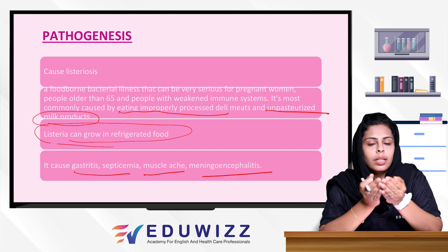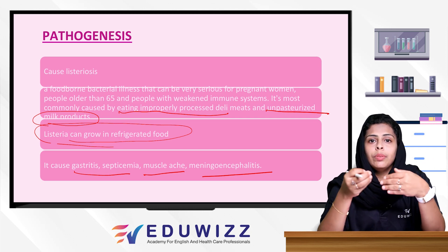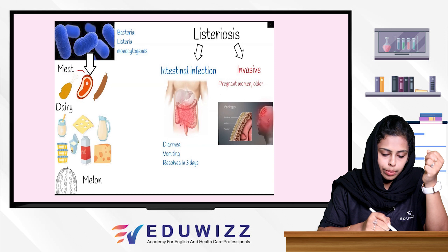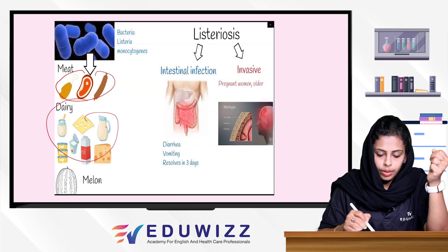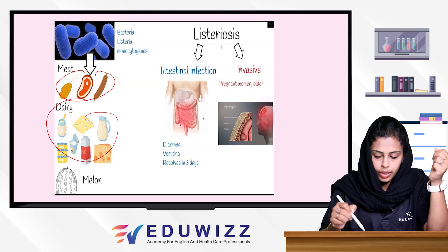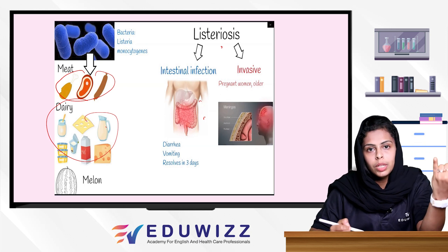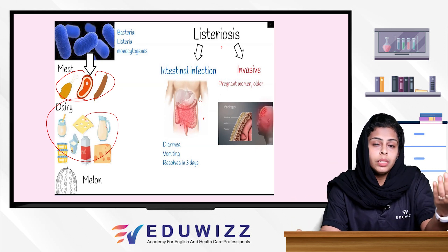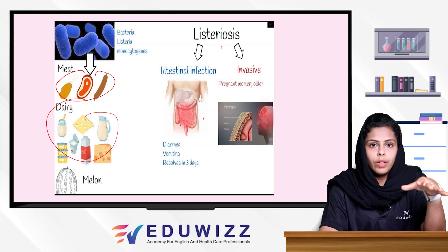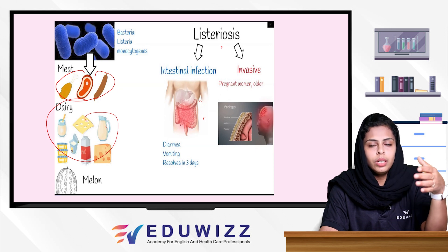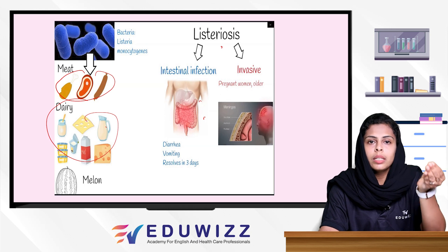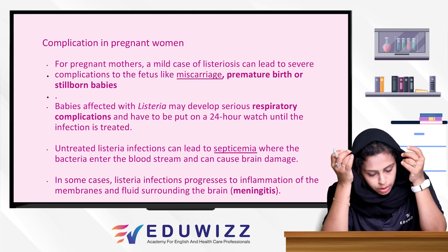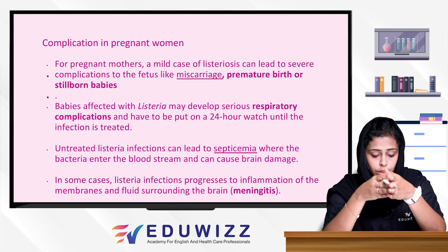Listeriosis begins as a foodborne intestinal infection causing gastritis. It can then progress to septicemia and meningoencephalitis. In a normal person, symptoms like diarrhea and vomiting are self-limited within about 3 days. However, in a pregnant woman, it can progress to septicemia and encephalitis. The complications in pregnant women are serious — a mild case of listeriosis can lead to severe complications to the fetus.